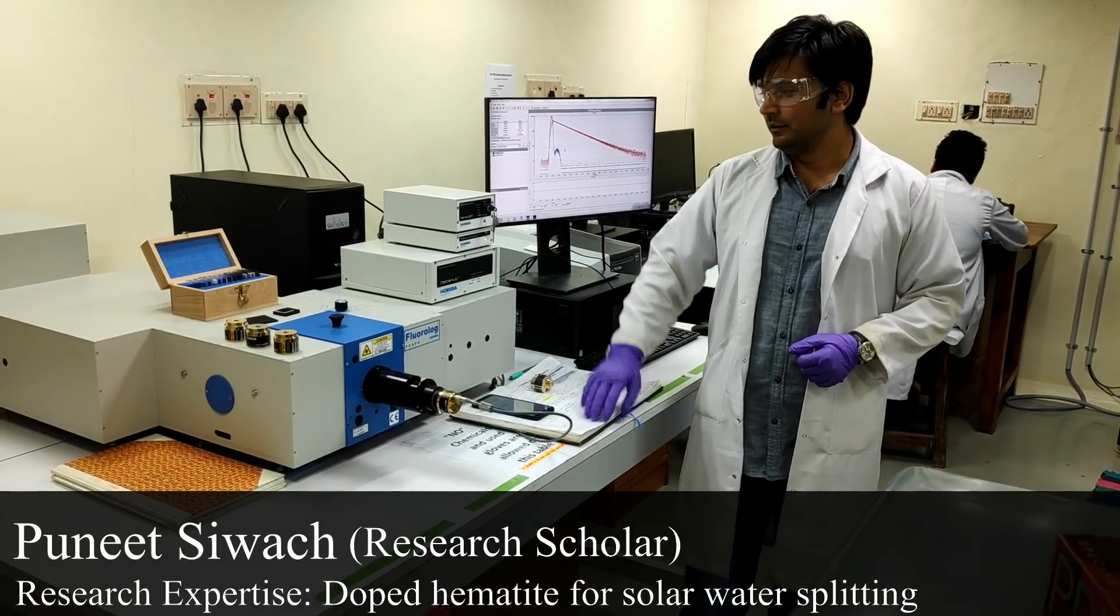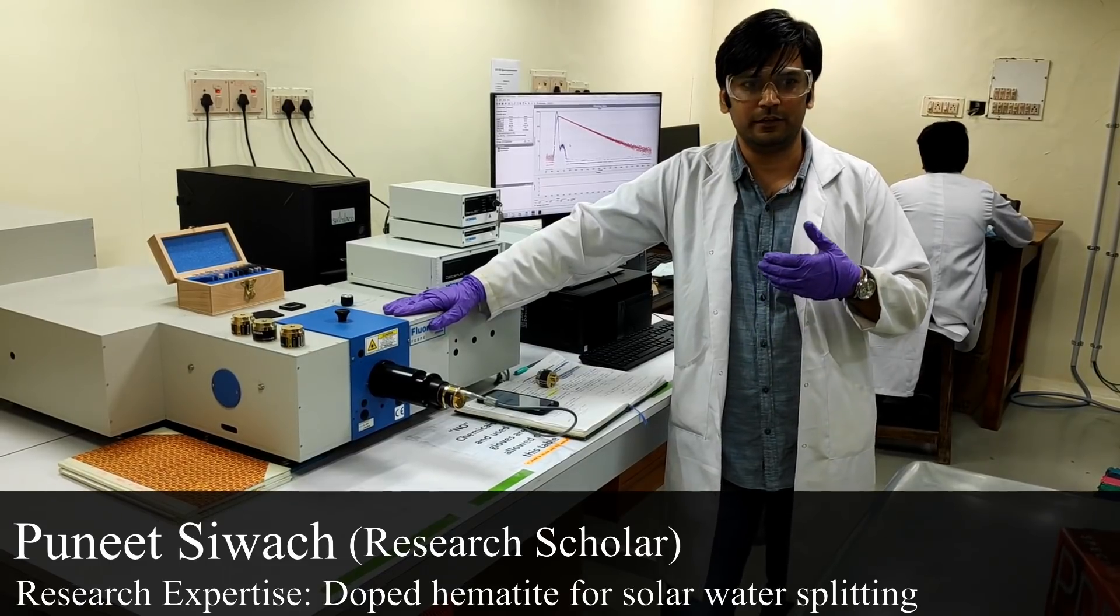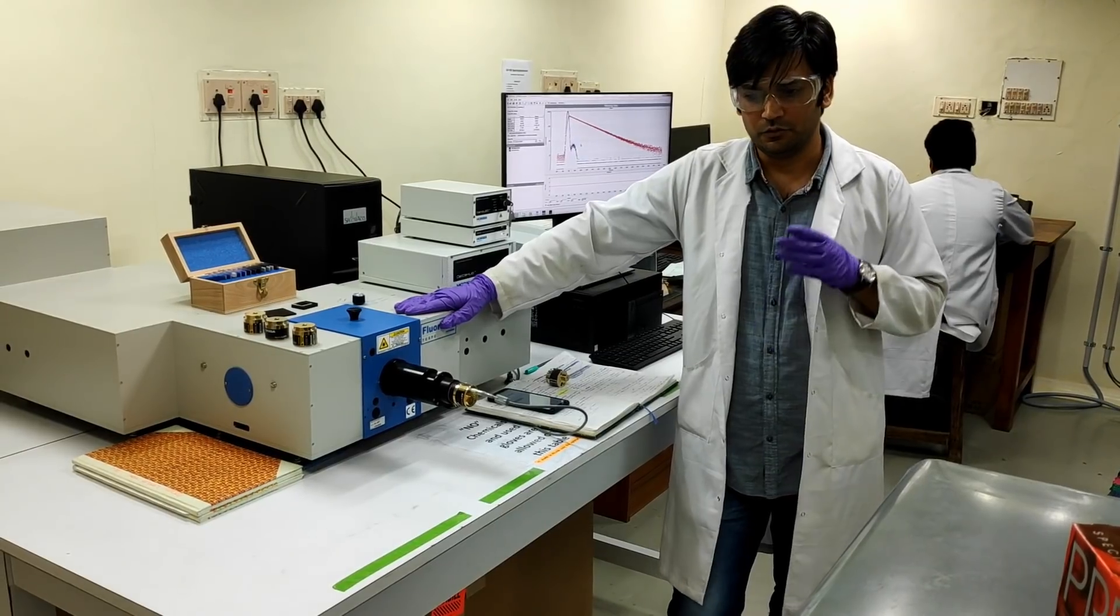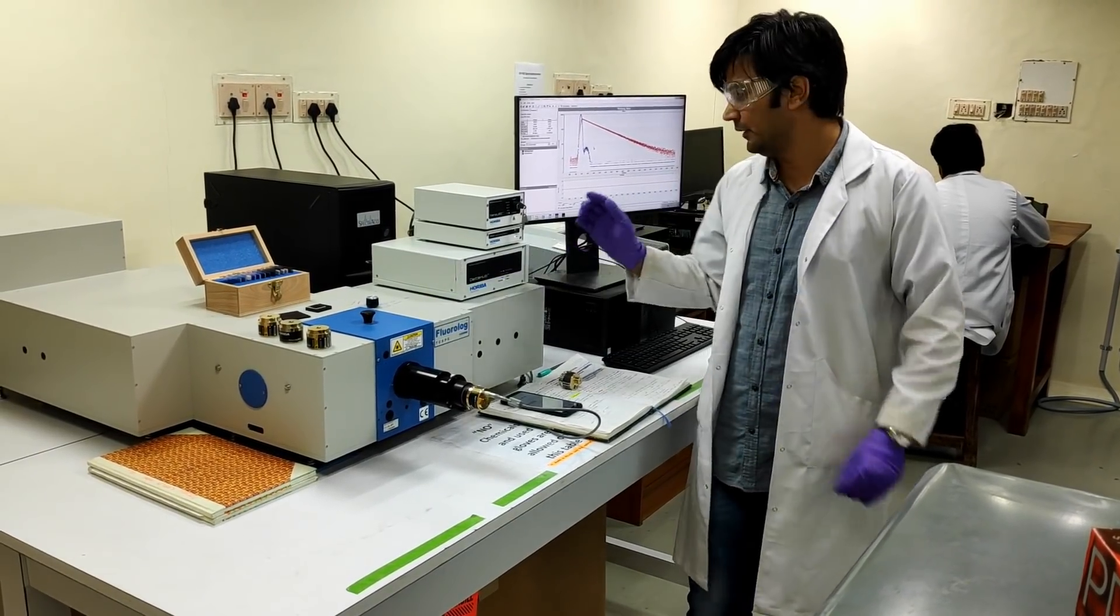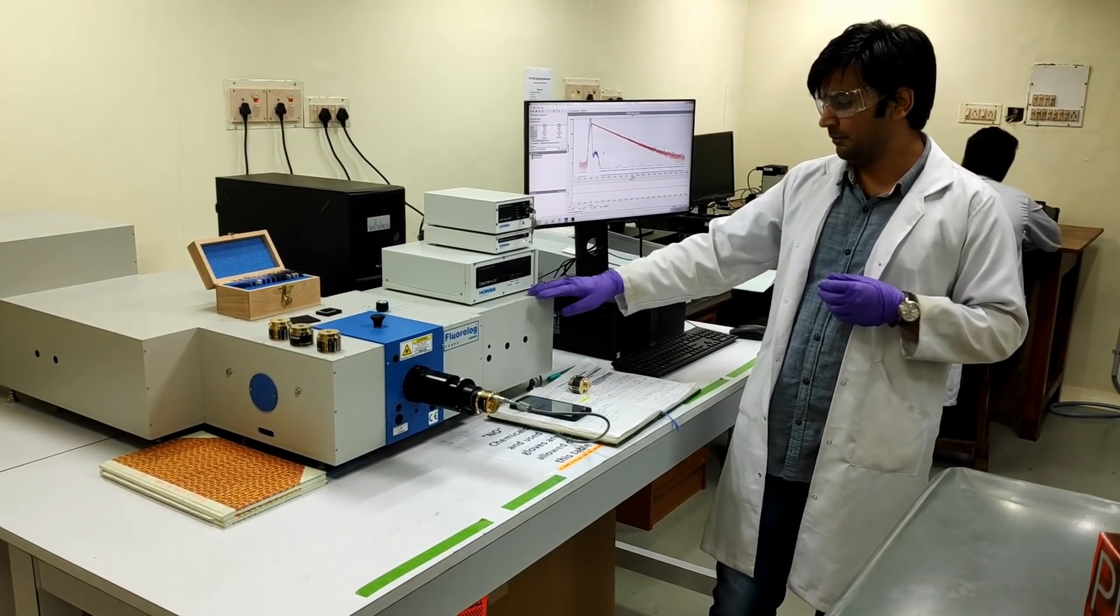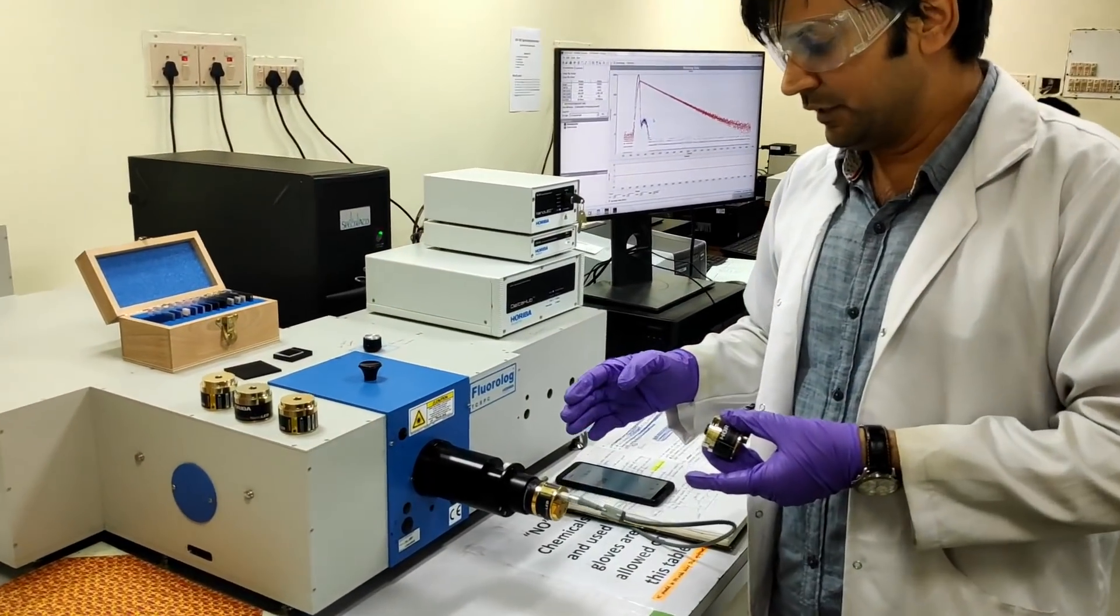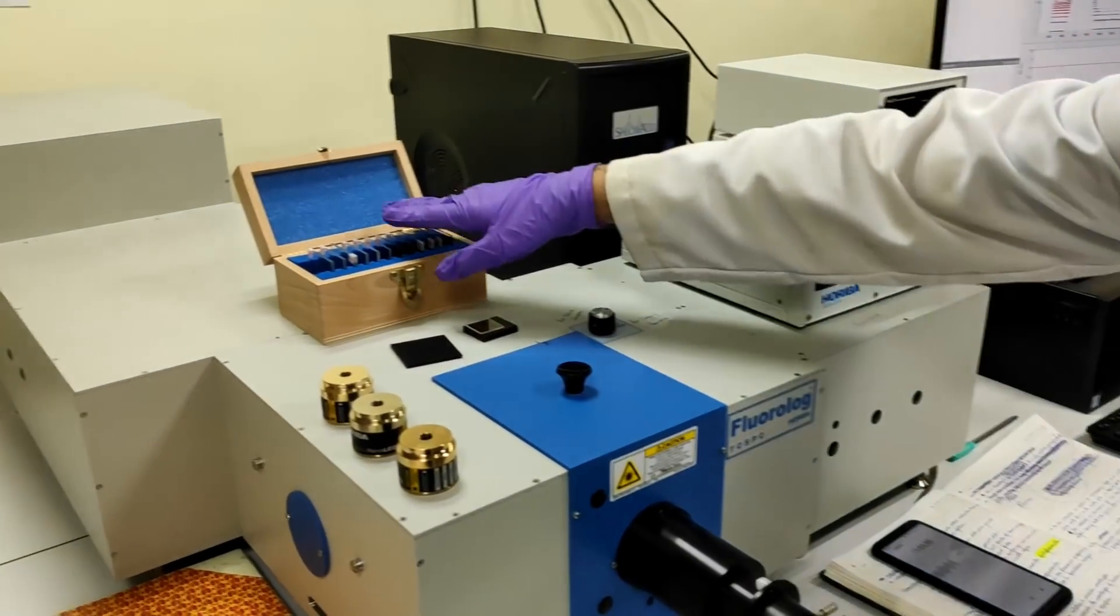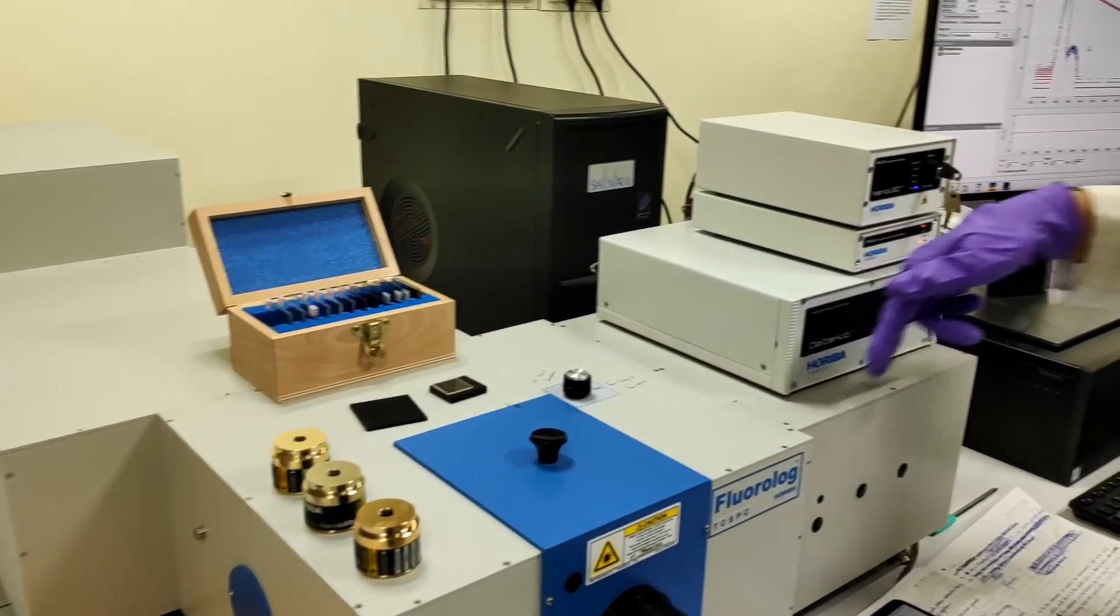Hello everyone. This is a spectrofluorimeter and it's a very sensitive equipment that can observe the changes happening in the time scale of 10 raised to power minus 12 seconds. You know, a human brain response time is 0.25 seconds. So this detector is a millionth of time faster than a human brain. So for this equipment, we need some specific kind of laser diode, pulsed laser diodes, which are in the time scale of picoseconds.